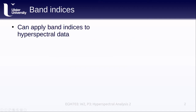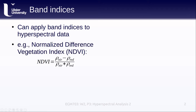We can create normalized difference indices or perform band arithmetic with hyperspectral images, just like we do with multispectral images. The main difference is we have a much larger number of band combinations that we can try to exploit. We've seen the normalized difference vegetation index, or NDVI, before — this is just the difference between the reflectance in the near-infrared and the red, divided by the sum of the reflectance in the near-infrared and the red.